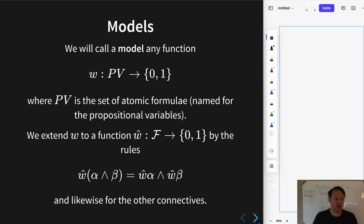And in particular, we basically associate the conjunction symbol with the conjunction function that we talked about in the previous video. So what is W hat on any formula of the form alpha conjunction beta? It is equal to this thing over here stated in terms of the conjunction function.